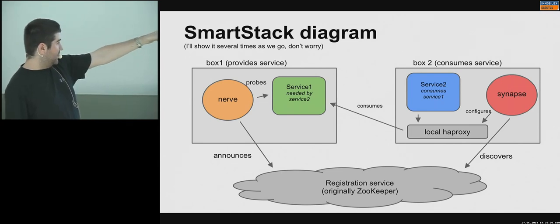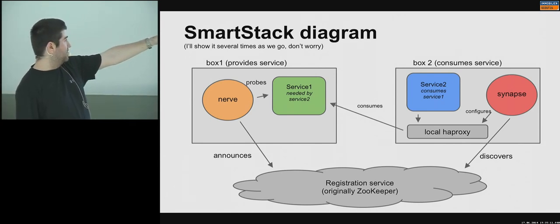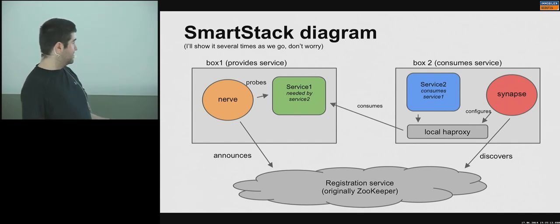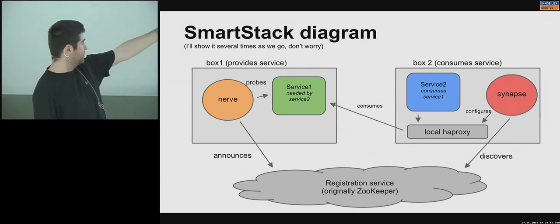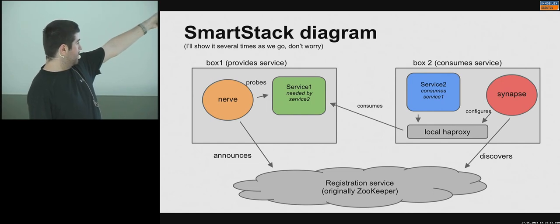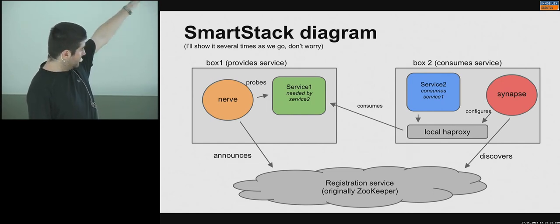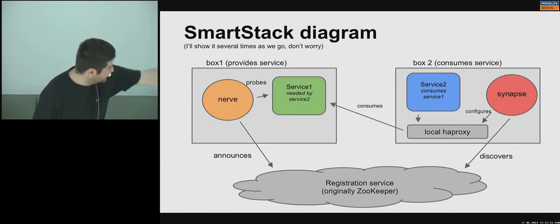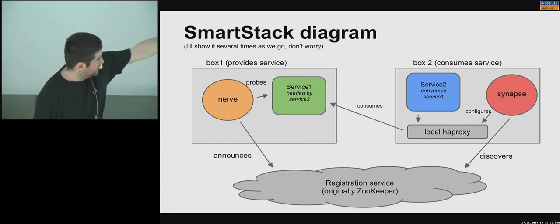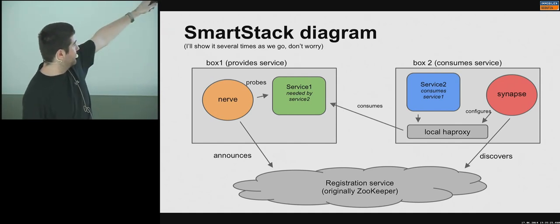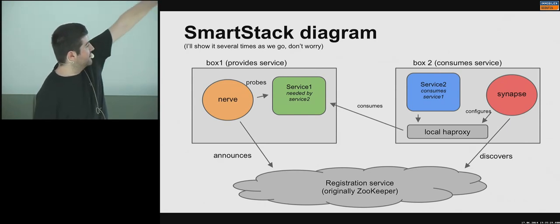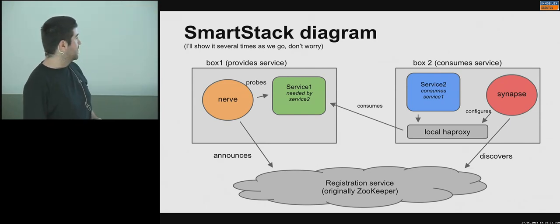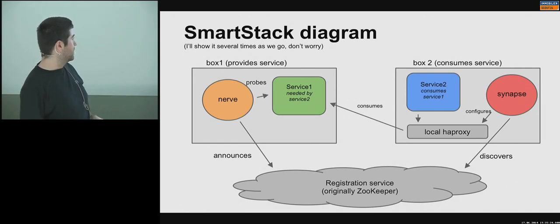Service Two connects to a local HA Proxy that knows where to find Service One. The first service is probed by Nerve, which is the first daemon that announces it. The other one discovers it and reconfigures its local proxy. If anything goes down — imagine Box One, and there are dozens of them — it all reconfigures itself automatically.